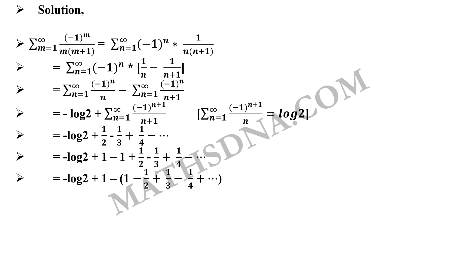Now taking negative sign as common from the right hand side term gives us minus log 2 plus 1 minus minus 1 by 2 plus 1 by 3 minus 1 by 4 which is nothing but log 2. So our required answer will be 1 minus 2 log 2 which is option a.